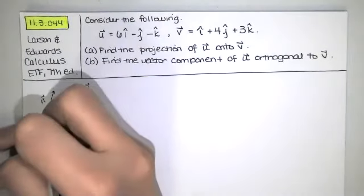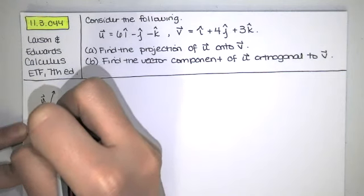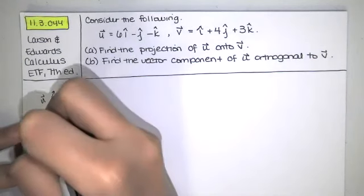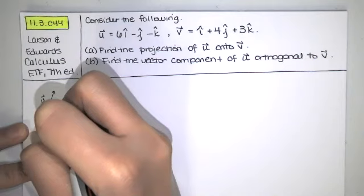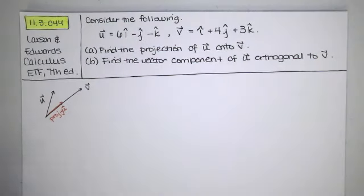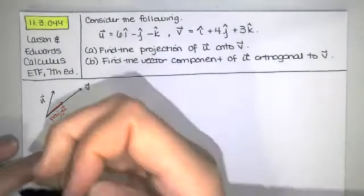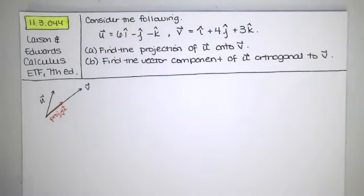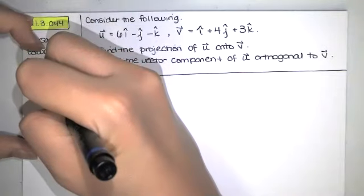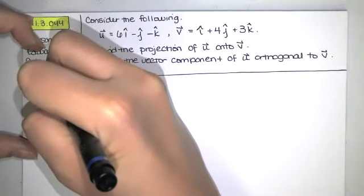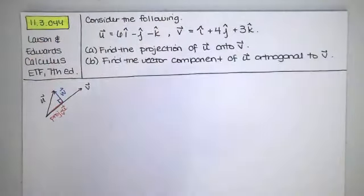One vector is a vector that is parallel to v. That's called the projection of u onto v. And then there's another vector that is orthogonal or perpendicular to v.